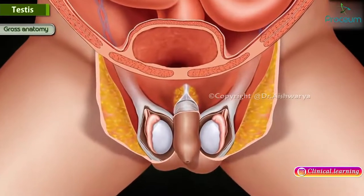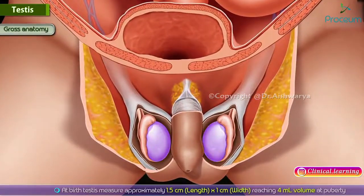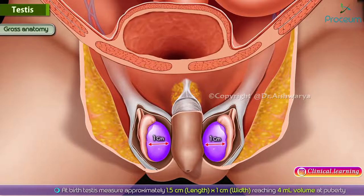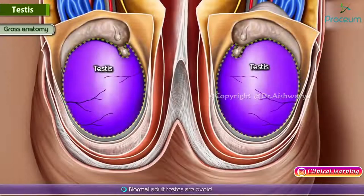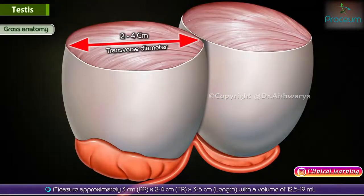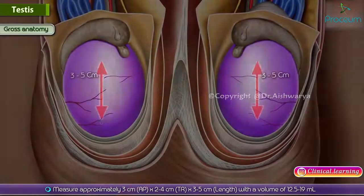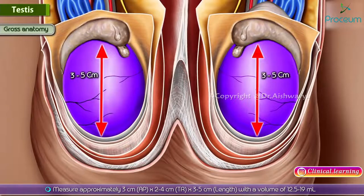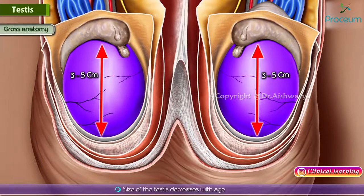Gross anatomy. At birth, the testis measure approximately 1.5 centimeters in length by 1 centimeter in width and reach about 4 ml volume at puberty. However, the size of the testis decreases with age.